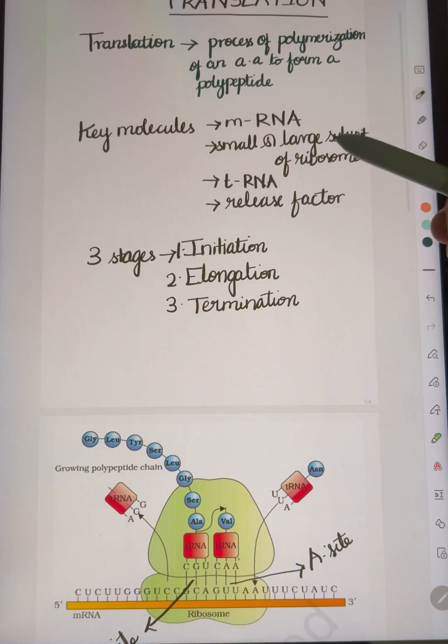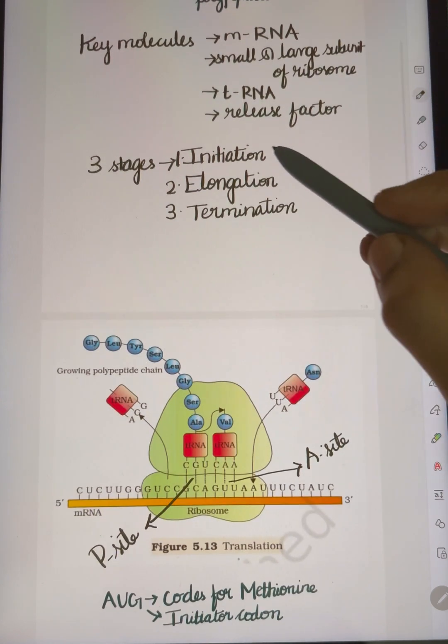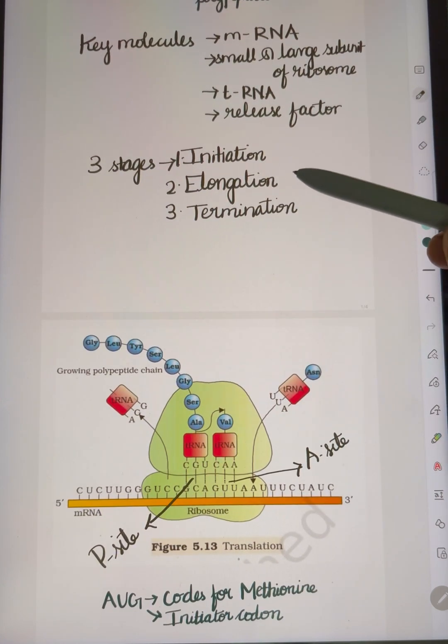What are the key molecules involved? mRNA, small and large subunits of ribosome, tRNA, and release factor. These are the three stages of translation: initiation, elongation, and termination.